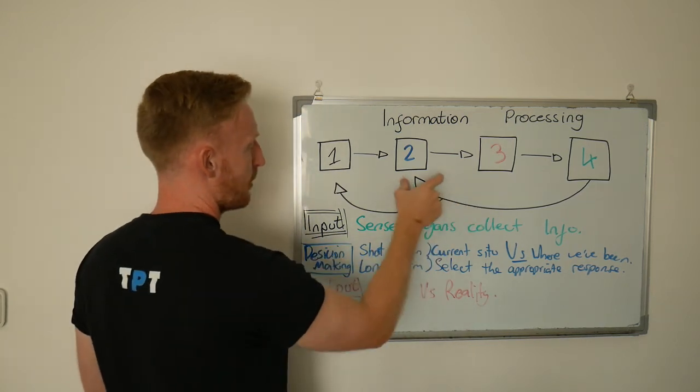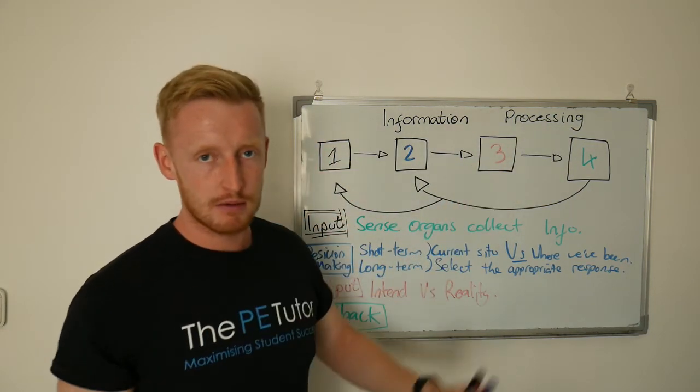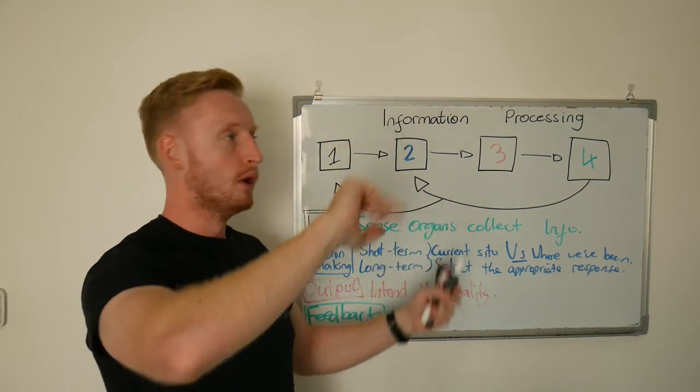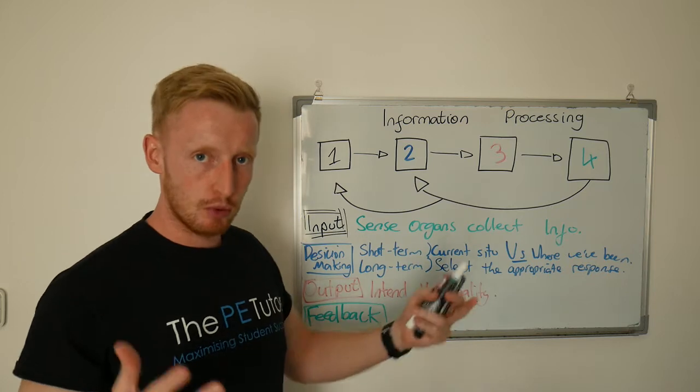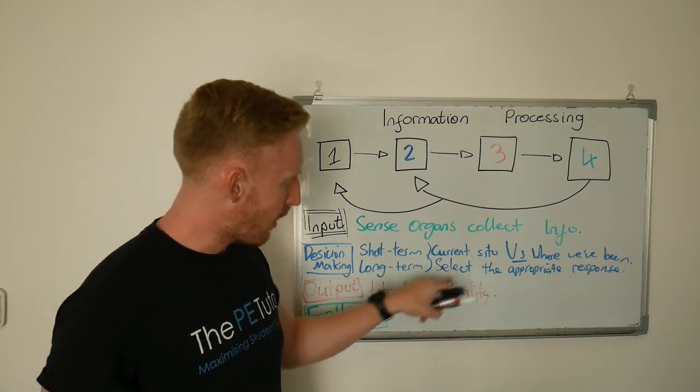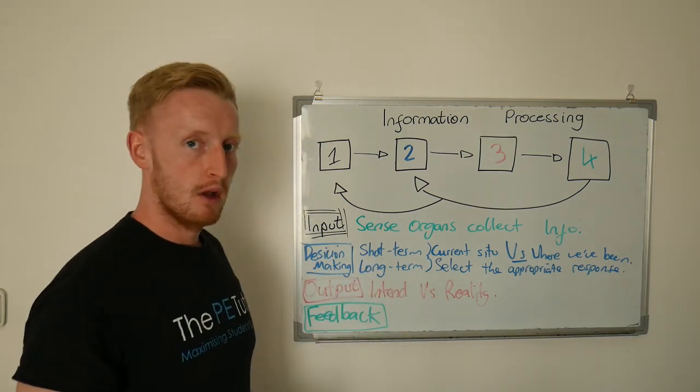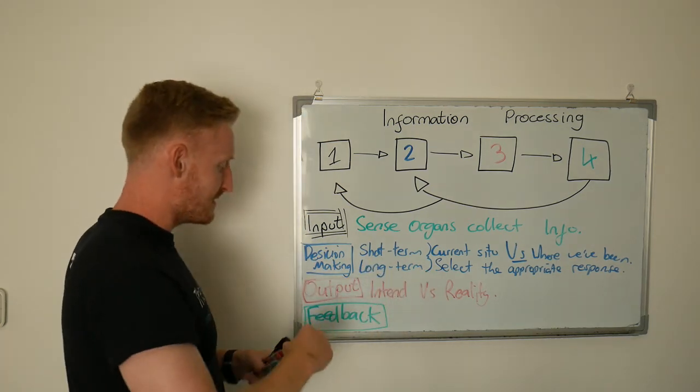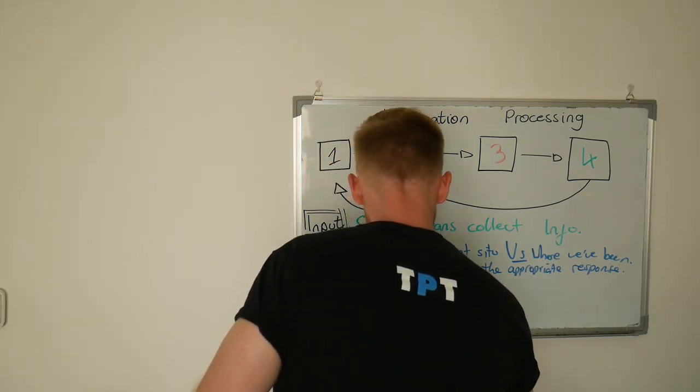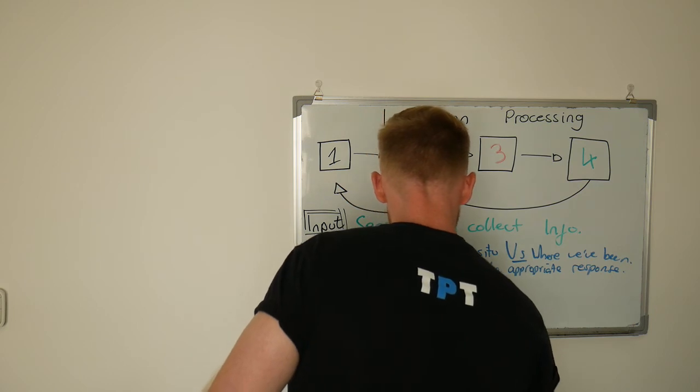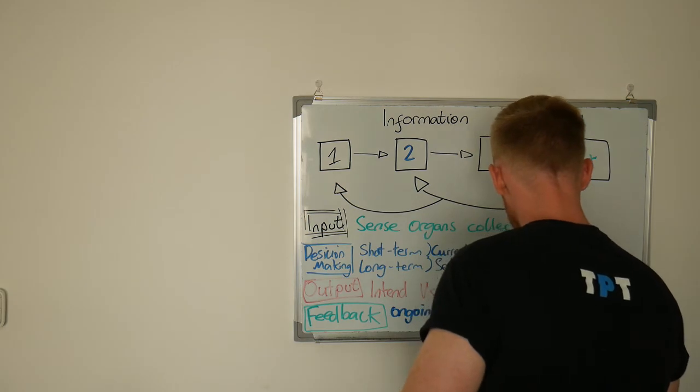But I've also got this arrow going into this second box. Because when all's said and done and the act is complete—and I've either caught the ball, missed the ball, or almost got it but dropped it—once I've got the eventual outcome, the real life outcome, I can then put that into my long term memory. I've basically created an ongoing feedback loop and lasting feedback.